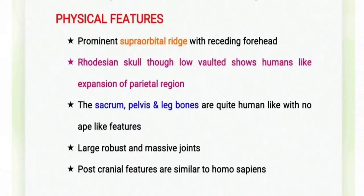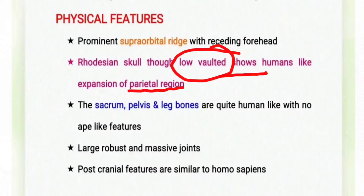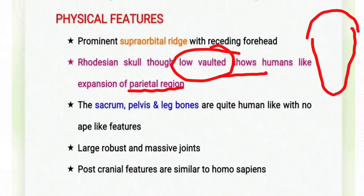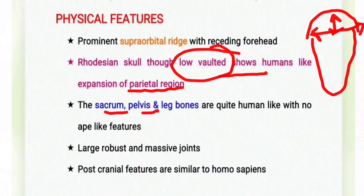The Rhodesian skull, though low-vaulted, shows human-like expansion of the parietal region. The vault of the head is the case in which the brain is protected. The Rhodesian Man's skull is quite low in the vault, meaning the space to protect the brain is smaller, yet its parietal expansion is similar to that of humans.